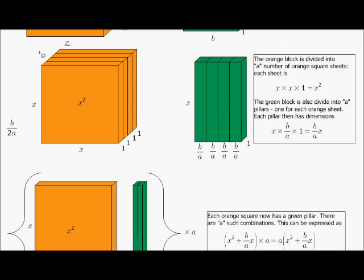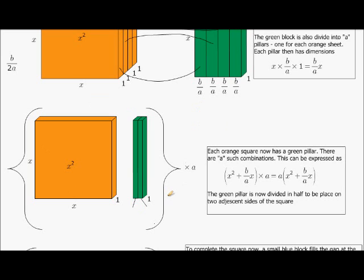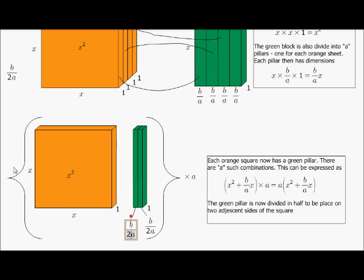What we'll now do is give each of these green pillars to a sheet. There will be the same number of pillars as orange sheets. So what do we have? For each sheet that is x by x — in other words, x squared volume — I have a pillar. This pillar has a width of b over a. This total width is b over a.